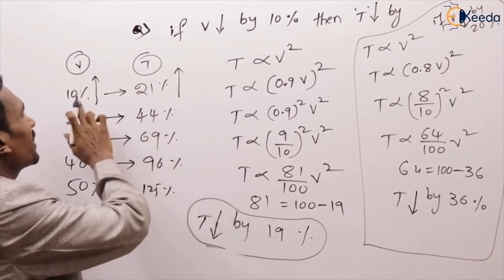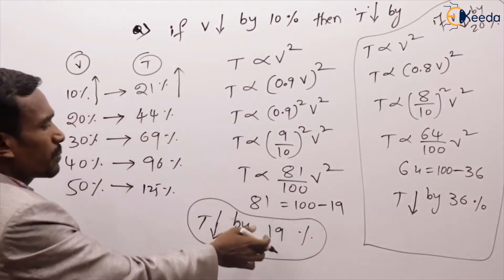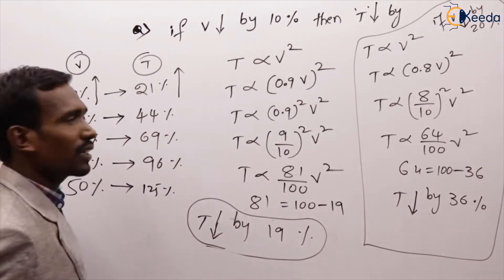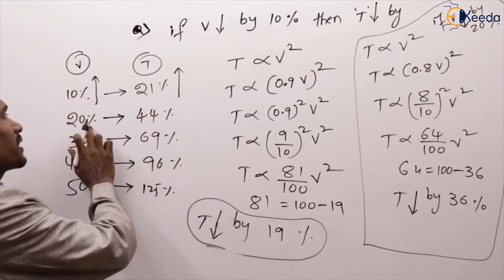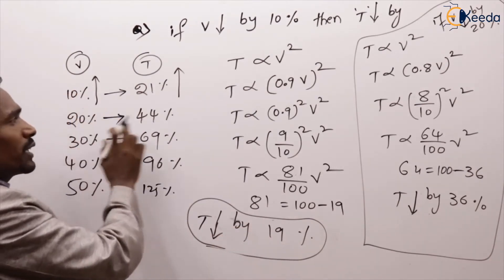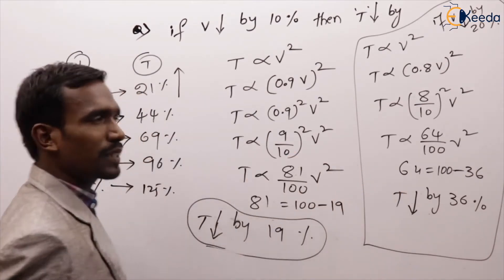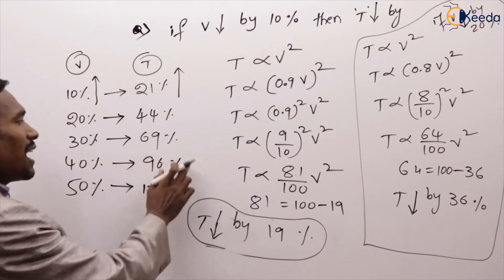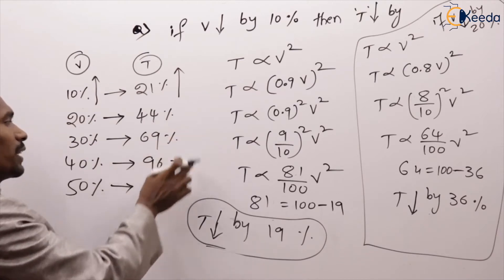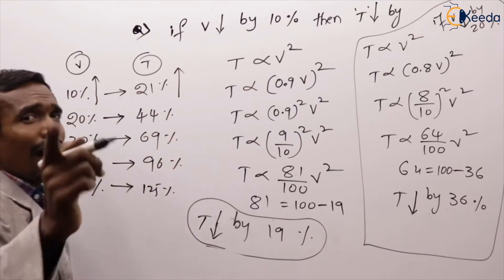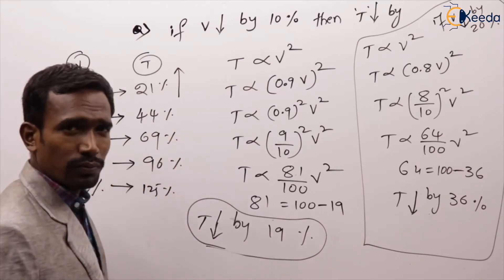If voltage reduced by 10%, torque reduced by 19%. If voltage reduced by 20%, torque reduced by 36%. You have to work out the remaining questions.